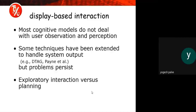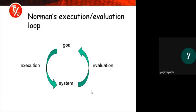Display-based interaction: most cognitive models do not deal with user observation and perception; some techniques have been extended to handle system output. Examples include D-TAG, PENNY, and ETM, but problems persist around exploratory interaction versus planning. The normal execution-evaluation loop diagram shows: goal, execution, system, and finally evaluation.